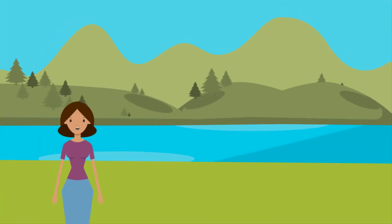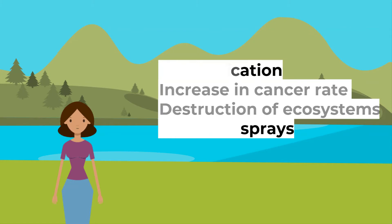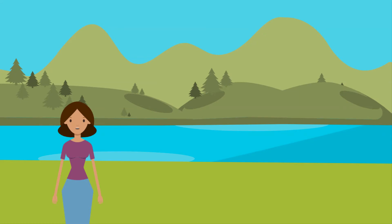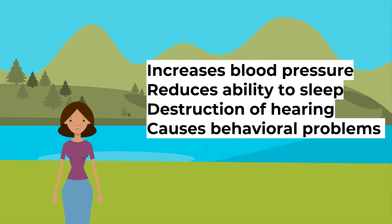Water pollution can cause the following effects locally: eutrophication from nitrates kills water animals; increasing cancer rates from anti-cancer medicines in sewage getting into the water supply; destruction of ecosystems; and chemical sprays and fuel leaks may contaminate. Noise pollution can affect the local population by increasing human blood pressure, reducing the ability to sleep, affecting animals' hearing at high decibels, and causing behavioral problems as animals use sound for signals.